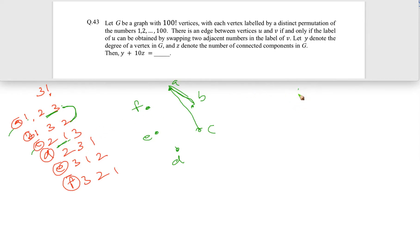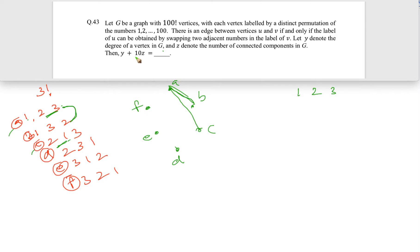Now let's understand what they're asking. Let y denote the degree of a vertex in G, and z denote the number of connected components in G. We need to find the value of a certain expression. So we are figuring out the total number of connected components and the degree of a particular vertex.